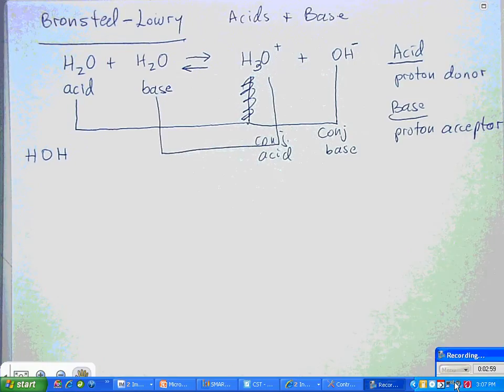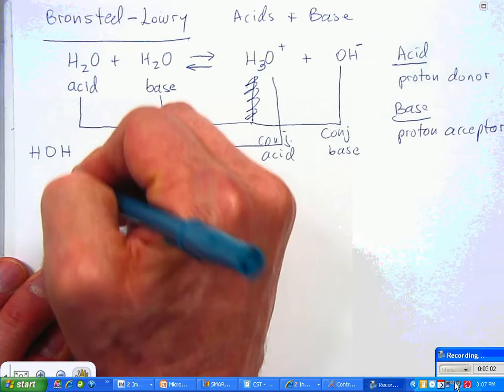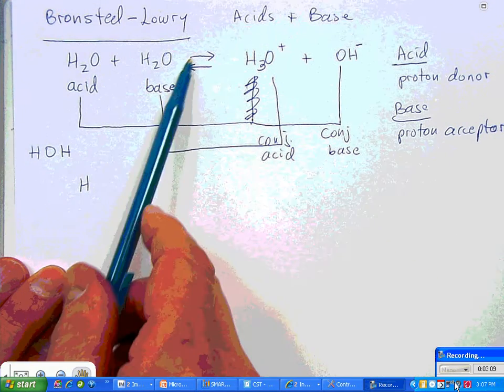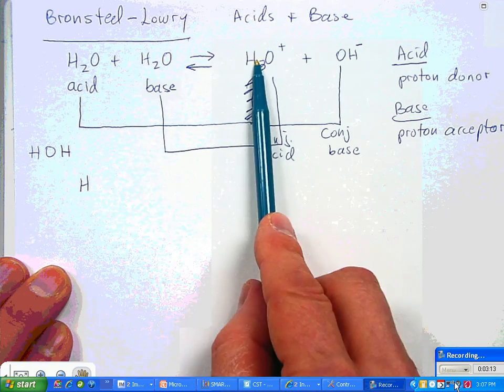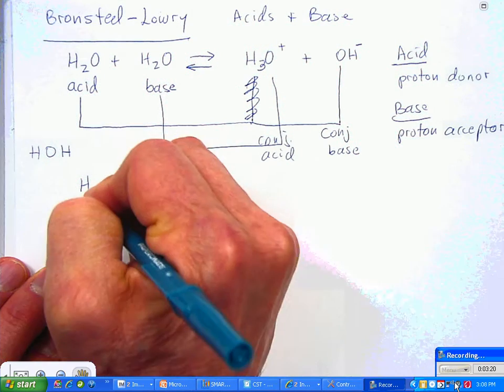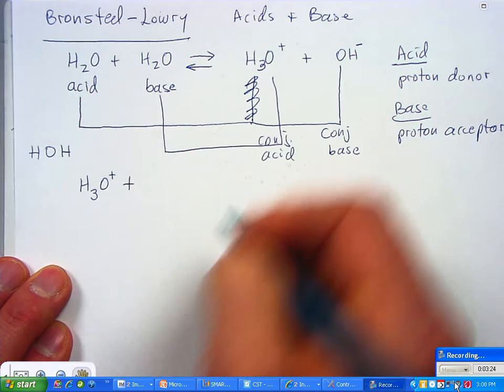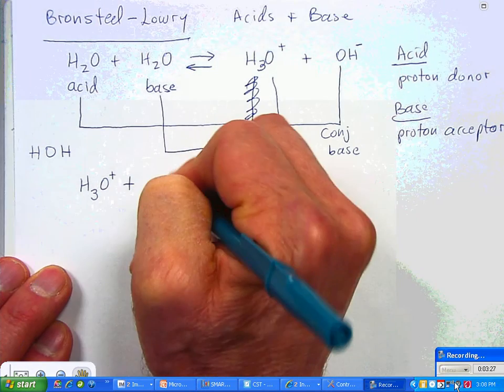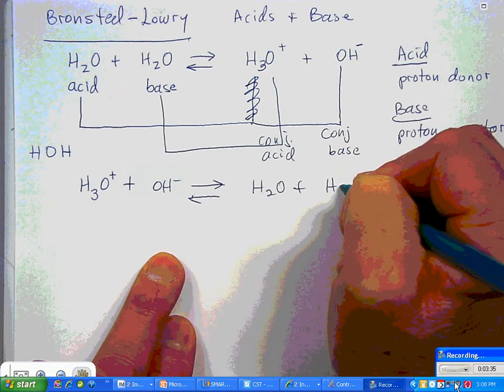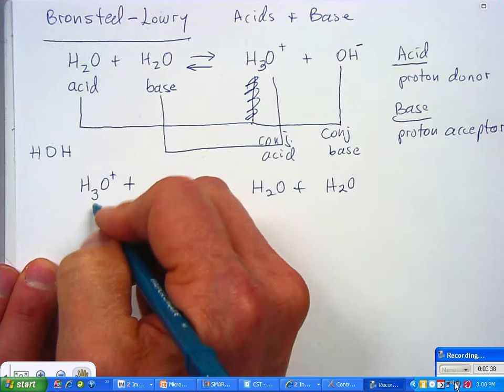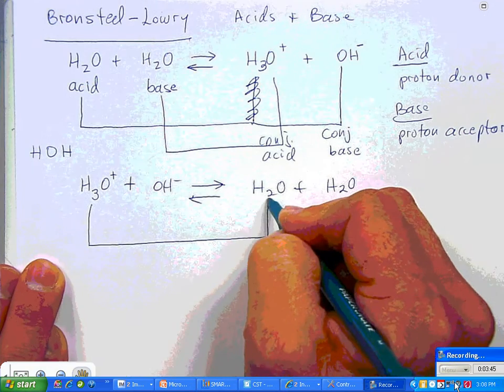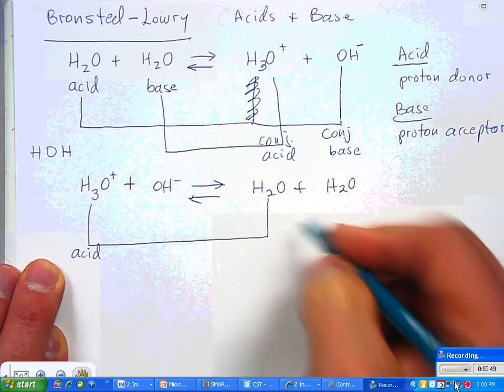And the conjugate acid is the one who is the base with an extra proton because he accepted the proton. Now, this whole business of conjugates will make sense if we look at this backwards. Do you notice this is a two-way arrow? These are reactants. These are products. For this arrow. But for this arrow, these are reactants and these are products. Now, let's write it backwards. And you're going to see how we identify conjugates from regulars. There we go back and forth. And now we're going to have water and water over here. And now this being the acid is going to be a proton donor.